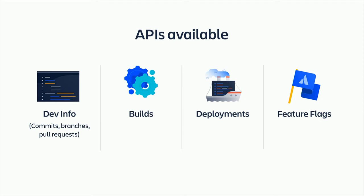The second API is new — it's around supporting builds. This is the workhorse of software development: run a build, get a status, make that information available. This is for standard tools like CircleCI, Bitbucket Pipelines, or Jenkins, which is very popular.